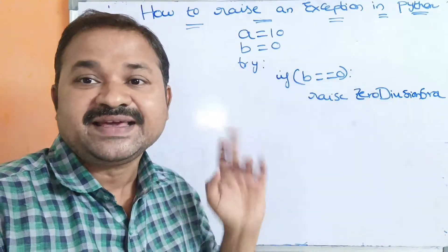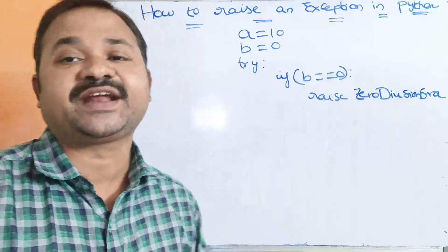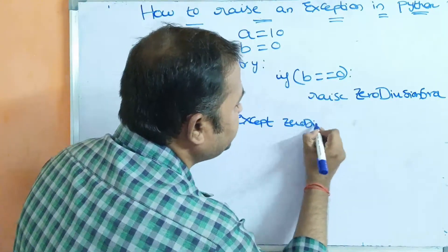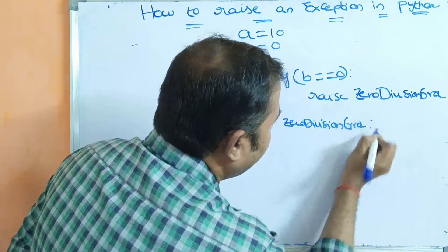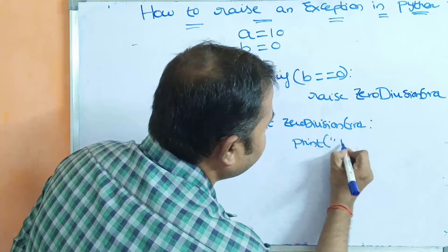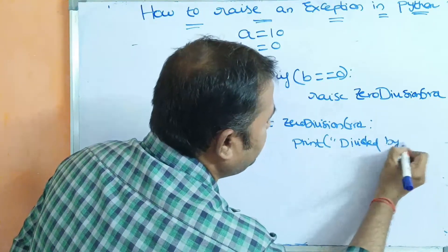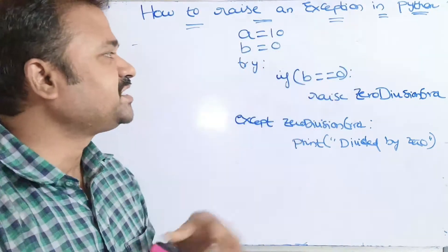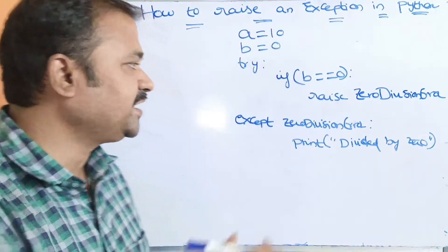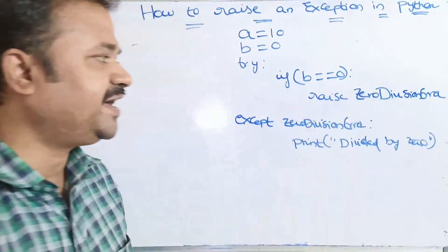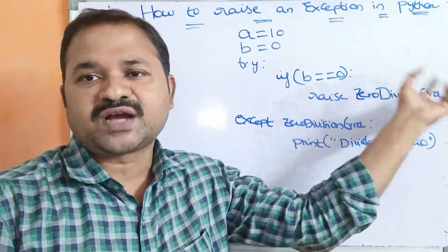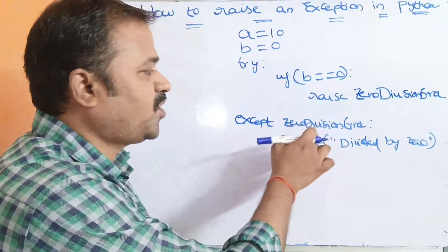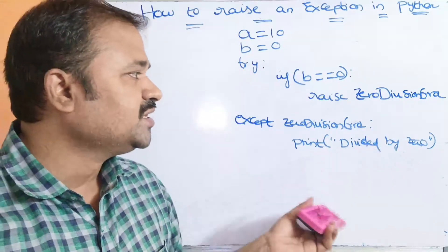This exception will be thrown to the except block with the class name ZeroDivisionError. In the except block, we display the message: 'divided by 0'. So when the try block executes, b is 0, the condition is true, the raise keyword raises ZeroDivisionError, control transfers to the except ZeroDivisionError block, and the message 'divided by 0' gets printed.